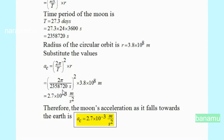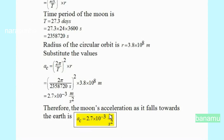Substituting T = 2,358,720 seconds and R = 3.8 × 10⁸ meters into the formula, AC = (2π/T)² × R gives AC = 2.7 × 10⁻³ m/s². Therefore, the moon's acceleration as it falls towards the earth is 2.7 × 10⁻³ m/s².